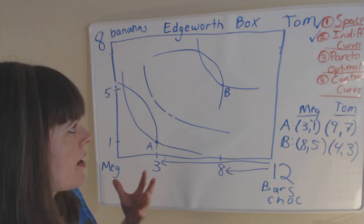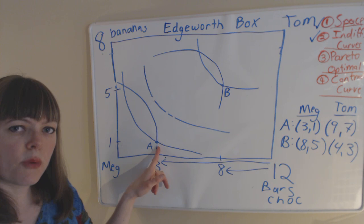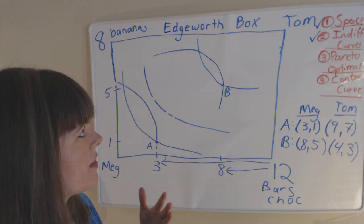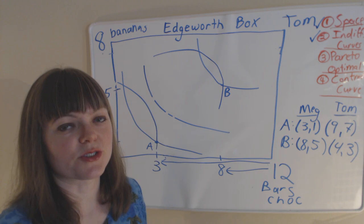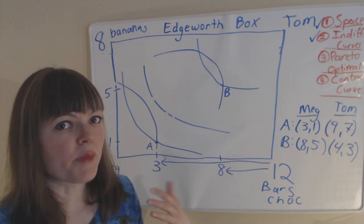So now how do we think about Pareto optimality? Well let's start by asking ourselves, is point A a Pareto optimal point? And in this case, what this really means is could Meg and Tom make some mutually beneficial trade between bananas and chocolate that would benefit both of them? And if that's true, then this is not a Pareto optimal point.